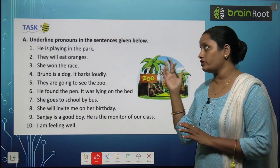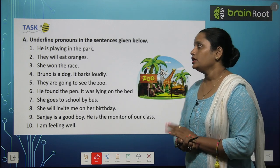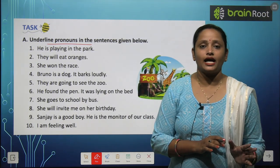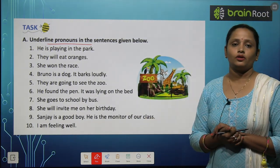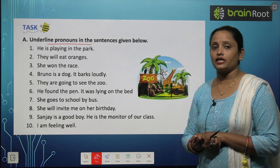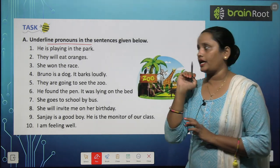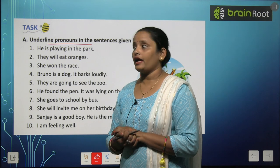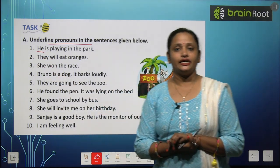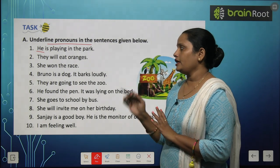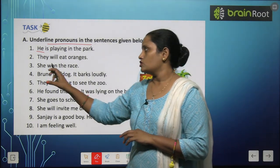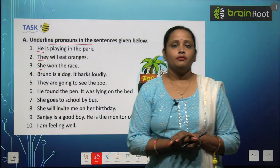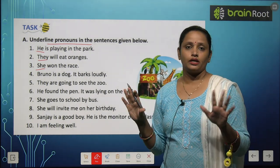Now children, let's move on to the first exercise of our chapter. This is Exercise A. What we have to do here is underline the pronouns in the sentences given below. Some pronouns are given in sentences here and we have to underline them. First one: He is playing in the park — he is in the park. So what is the pronoun here? He. Next: They will eat oranges — so the pronoun is 'they'. She won the race — pronoun is 'she'. Bruno is a dog — there is no pronoun in this one.